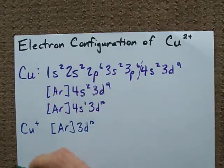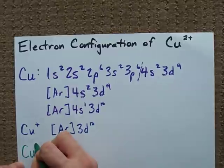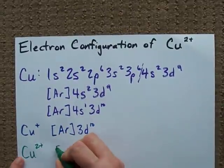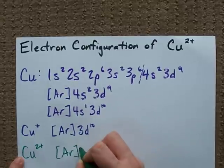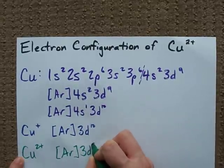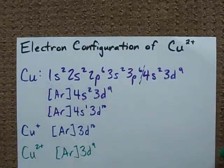But how do we create a copper 2 plus ion? You don't get a choice here. You've got to remove the electron from the 3d orbital. It becomes 3d⁹.